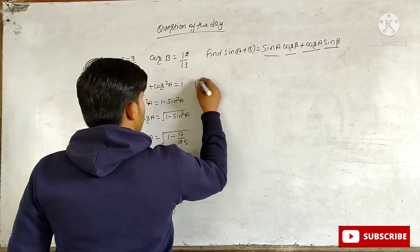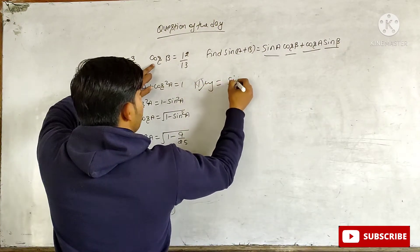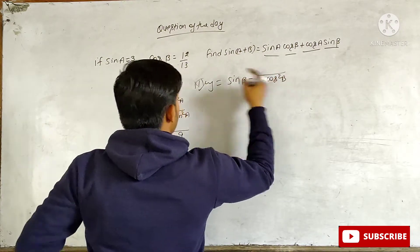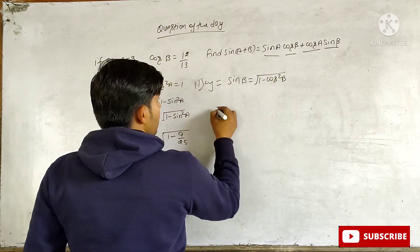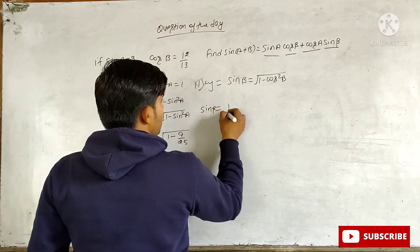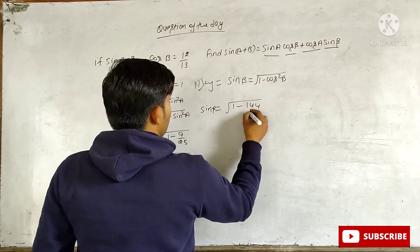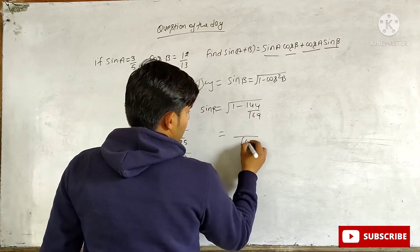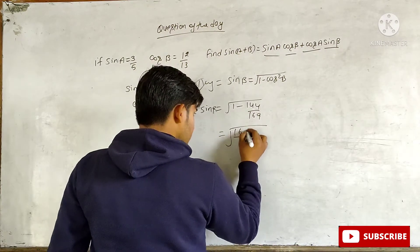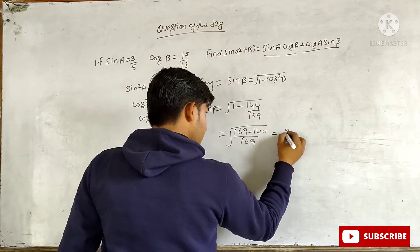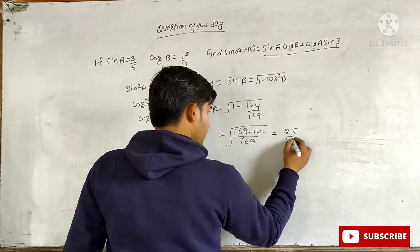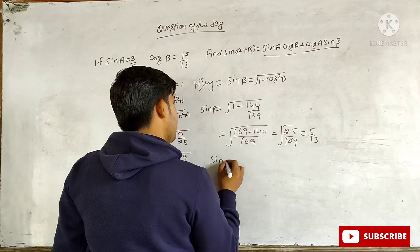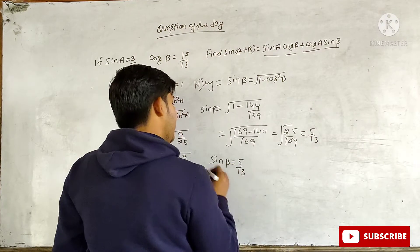Similarly, sin B equals the square root of (1 − cos²B). Putting cos B = 12/13, sin B equals the square root of (1 − 144/169). The LCM is 169, so 169 − 144 = 25. Therefore sin B = the square root of (25/169) = 5/13.